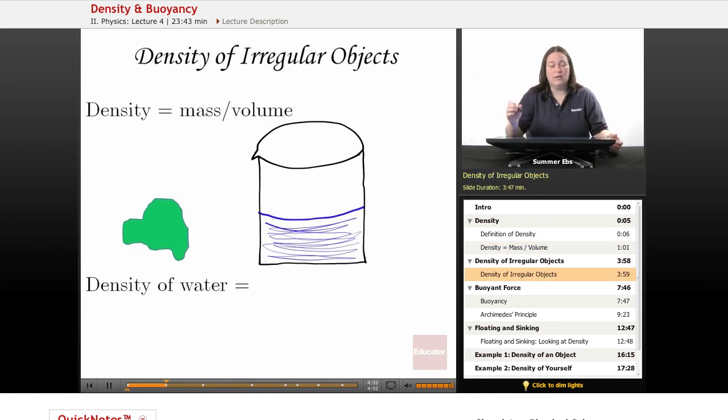We're looking at the density of irregular objects. If I wanted to measure the density of this green rock shape, I need to find the mass and the volume. Easier said than done, because I don't know how to find the volume by measuring it like we did with the cube. What we do here is displace water.